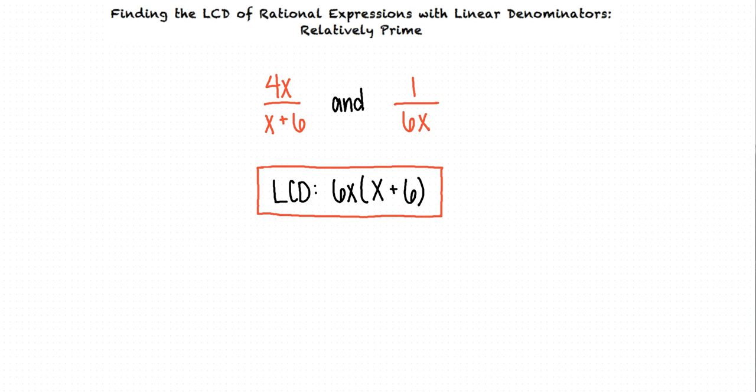Okay, so to find the least common denominator of rational expressions with relatively prime denominators, we need to find the product of the denominators. Exactly. Great work.